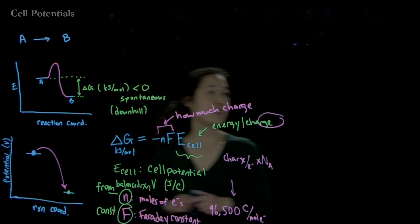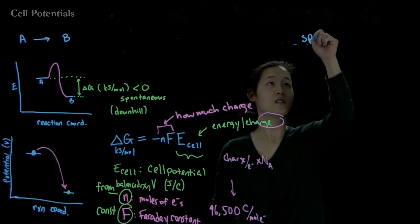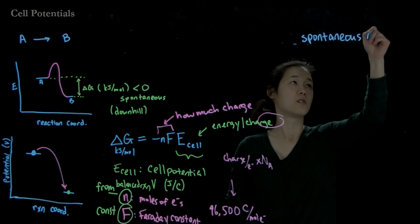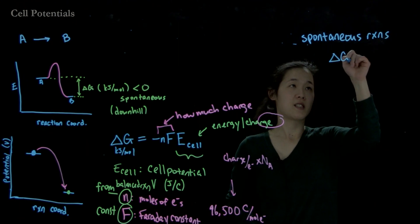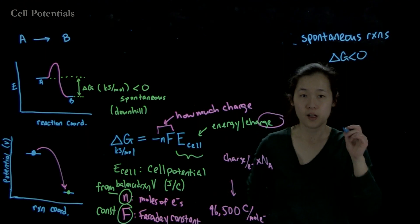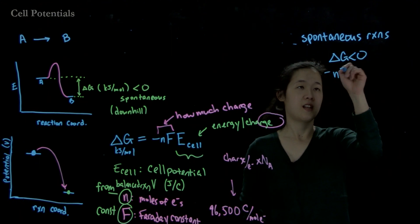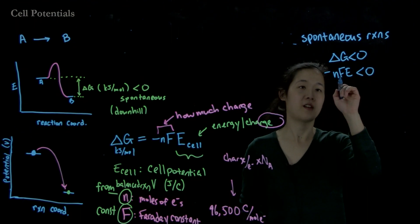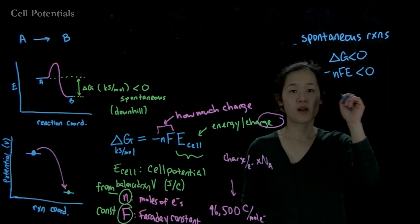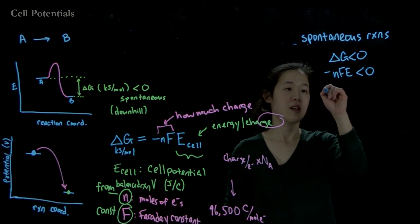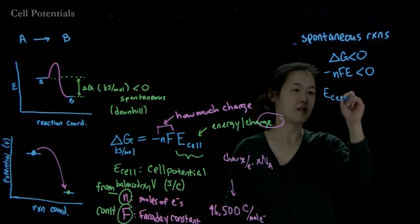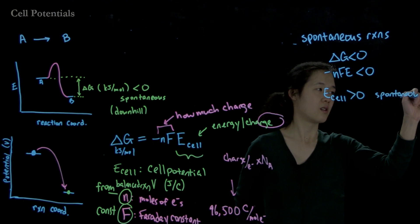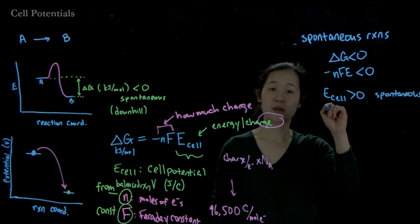For a reaction to be spontaneous, delta G must be less than zero. Therefore, negative nFE must be less than zero. Since the number of moles of electrons is always positive and Faraday's constant is always positive, E cell must be greater than zero for a reaction to be spontaneous. If E cell is less than zero, the reaction is non-spontaneous.